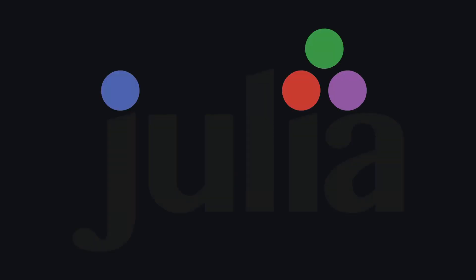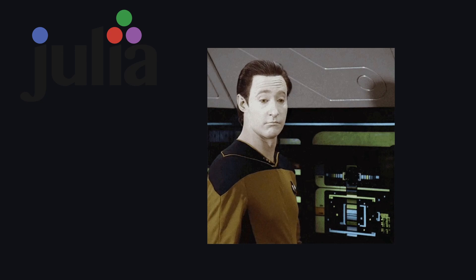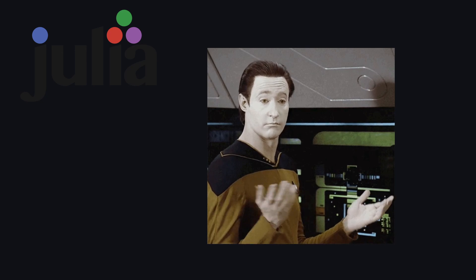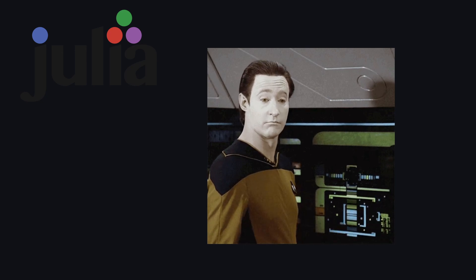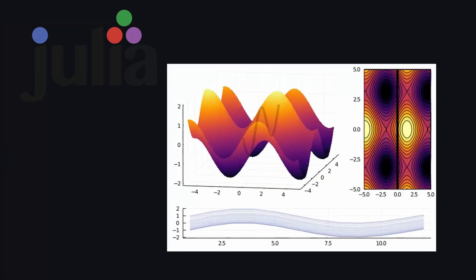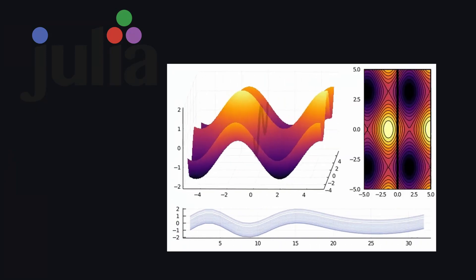Julia is a high performance language that specializes in data analysis and computational science. It can also be used to visualize data using 2D and 3D graphs, with the ability to add a time component to make them animate over time.